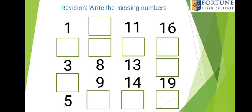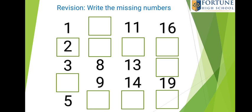Now children, let us do some activity. Will you help me to write the missing numbers? So let us start. What number comes after 1? Yes, you are right. After 1 it will be 2, 3, then 4. After 4 is 5.